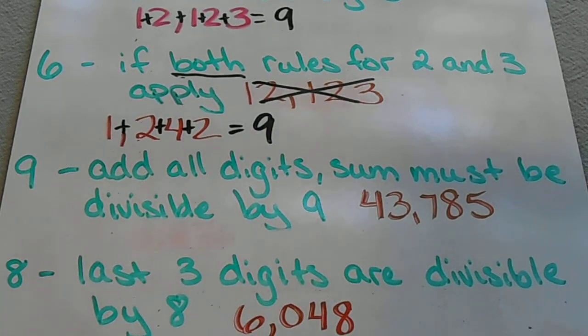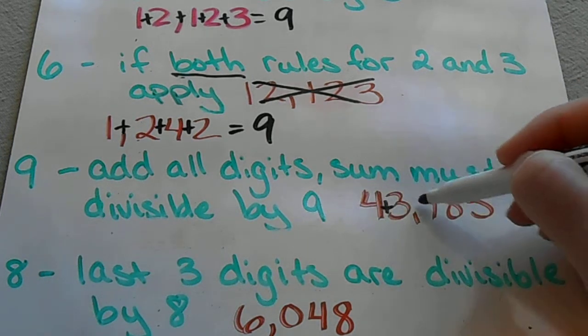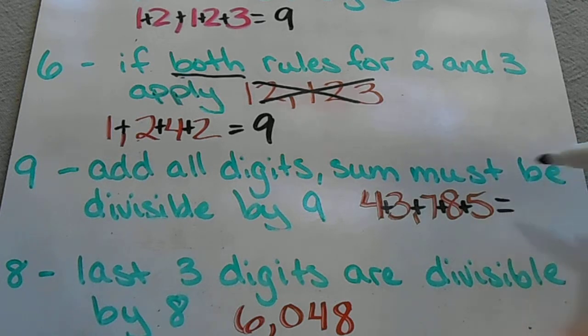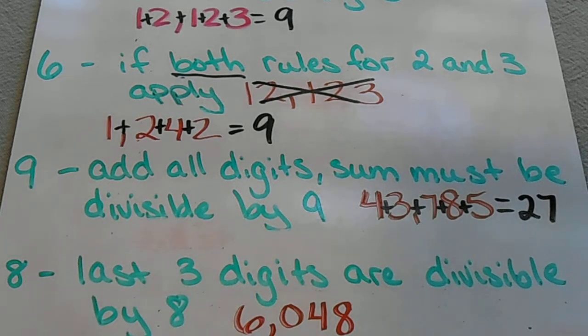The rule for 9 is pretty similar to 3, except the sum has to be divisible by 9. So if we add all of these numbers up in our big number, we get 27, and 27 is divisible by 9.